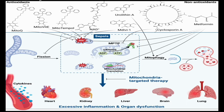In summary, the therapeutic agents targeting mitochondria in sepsis include: MitoQ, MitoVit3, and MitoTEMPO acting on reactive oxygen species; NAD+ also acting on reactive oxygen species; MDIVI-1 acting on fission to reduce mitochondrial damage; cyclosporine A acting on the MPTP to reduce mitochondrial damage; and metformin acting through multiple pathways to improve mitochondrial health. Thank you for your patience.